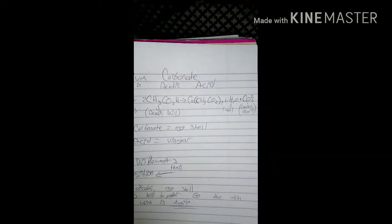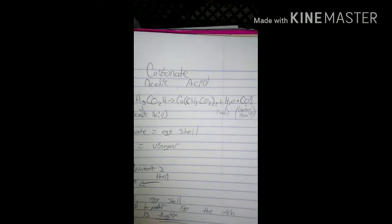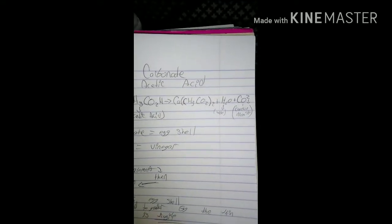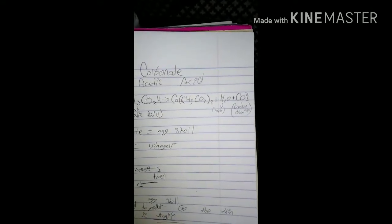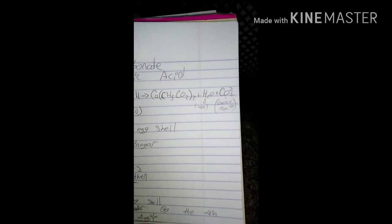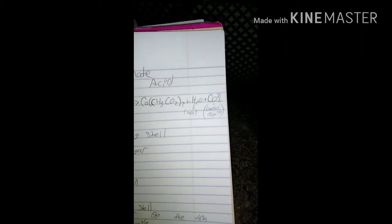Those are the reactants, which when combined yield Ca(CH3CO2)2, plus H2O, which is water, and CO2, which is carbon dioxide — or the bubbles you'll see forming when I perform this.